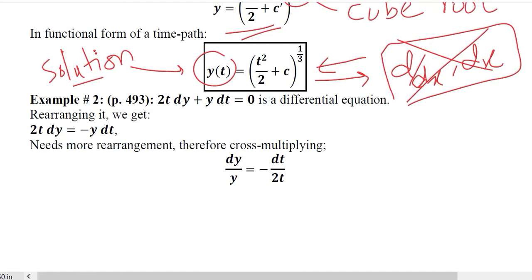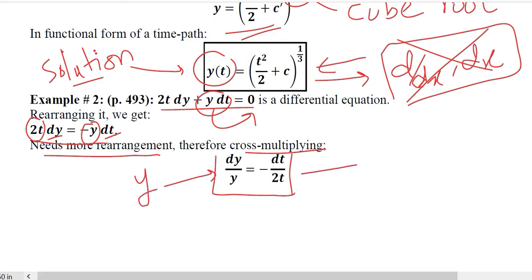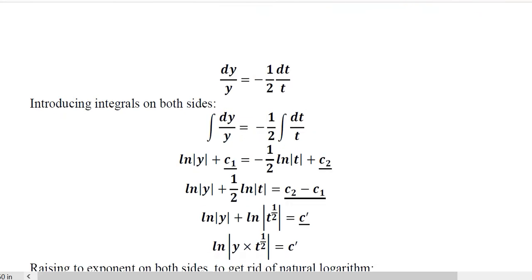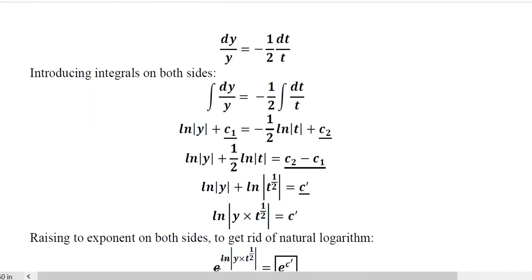Now we can do another example which has a slightly more intricate differential equation. Here you can see the terms are written in such a way that they are not readily separable. Example 2: 2t dy + y dt = 0 is a differential equation. Rearranging, 2t dy = -y dt. If I shift this term to the right-hand side, you can see that t is there with dy and y is there with dt. We need to do a little further rearrangement. We can cross multiply, which helps us keep the y terms on the left-hand side and t terms on the right-hand side: dy/y = -dt/2t.